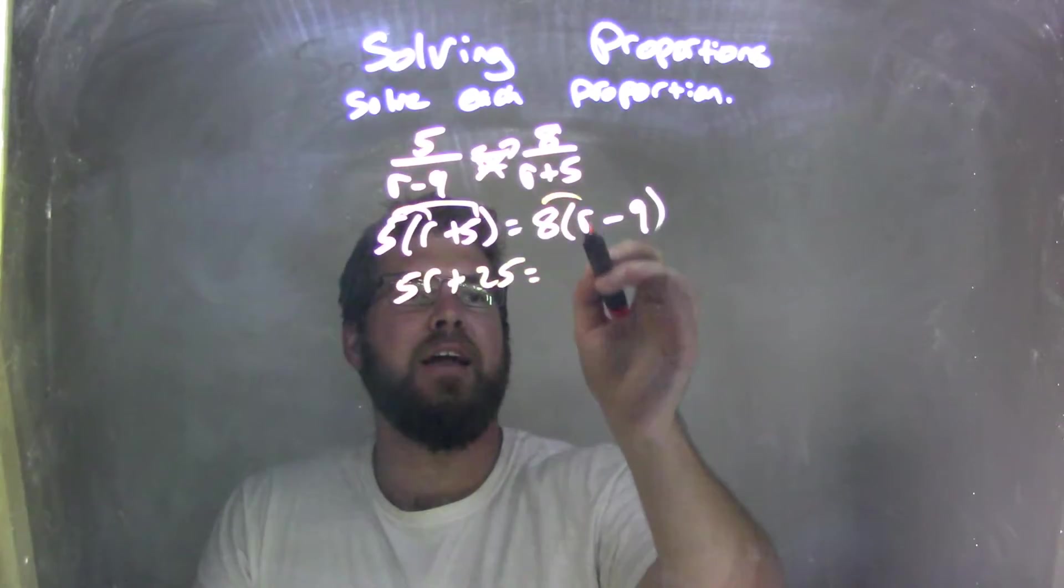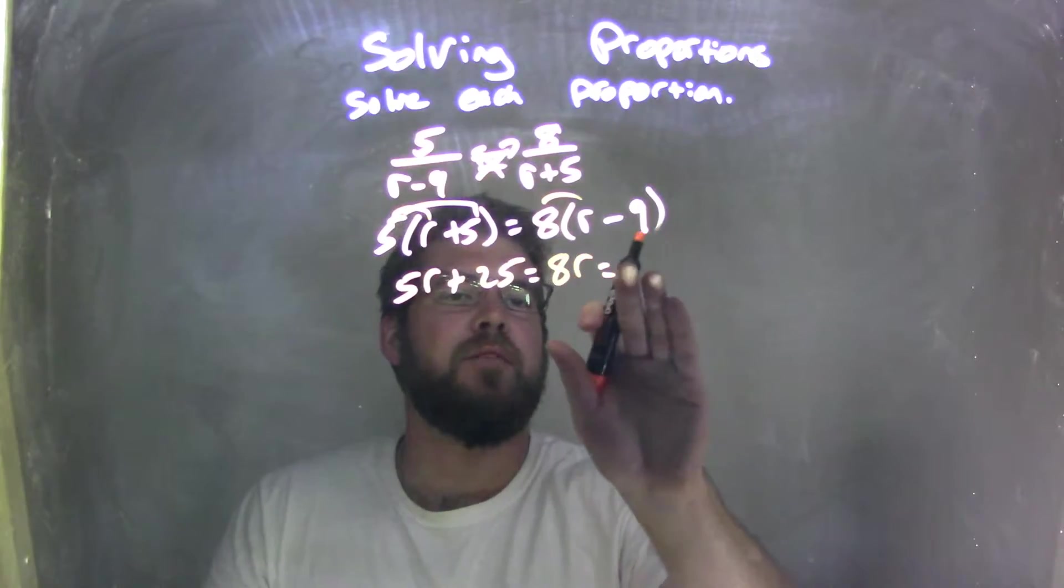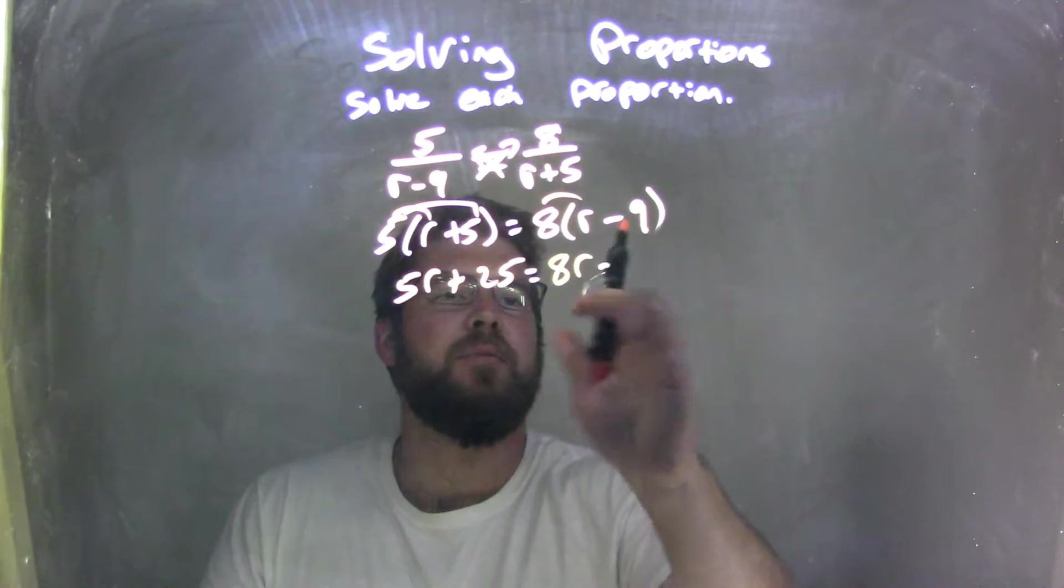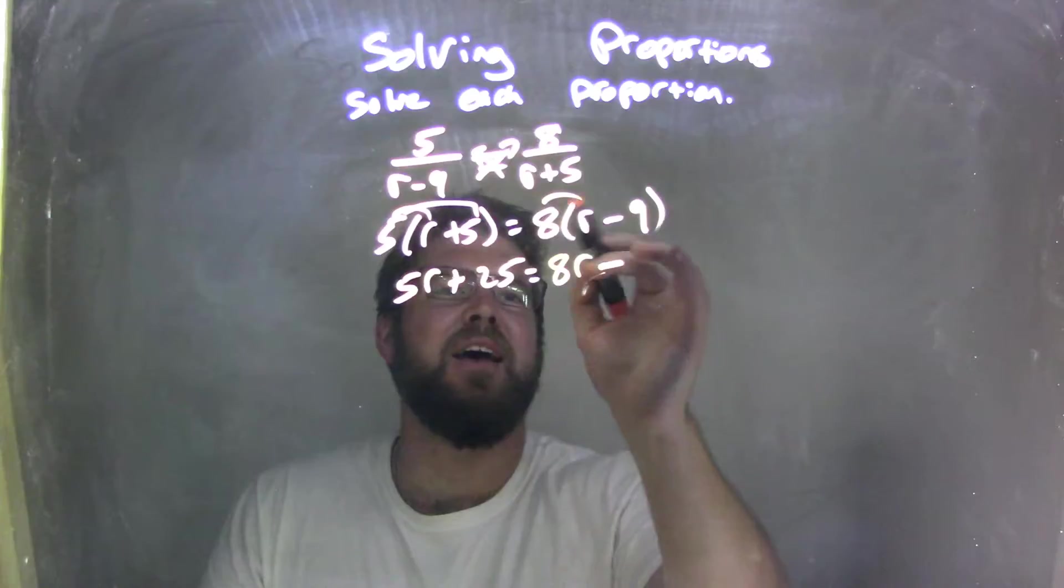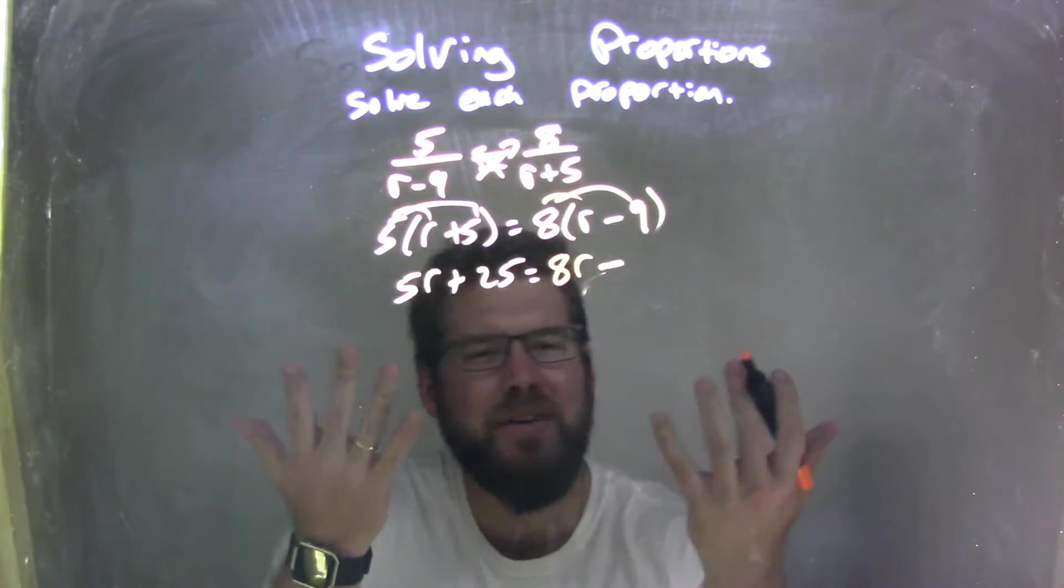I then distribute here the 8 as well. 8 times r is 8r, but not equal, just subtracting. And 8 times 9, and I always like to use 9s here.